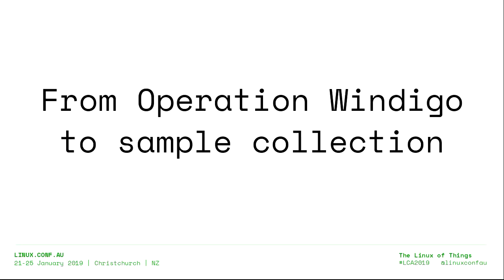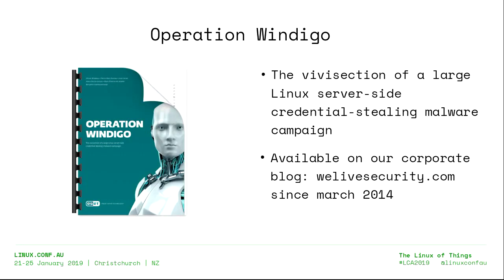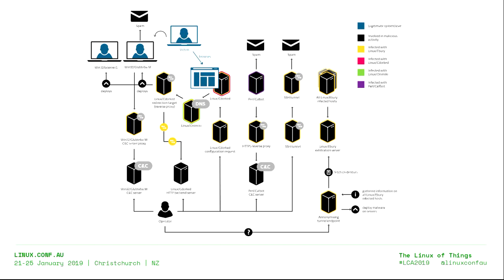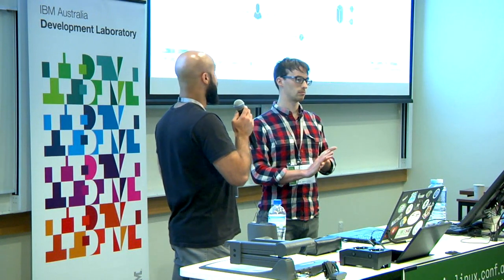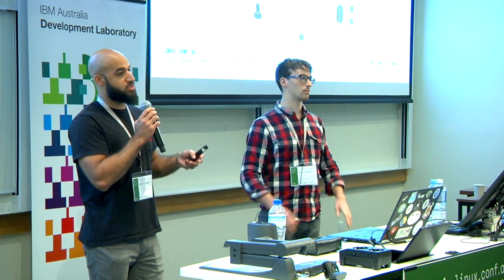In 2014 we released a paper about what we call Operation Windigo, still available on our blog. Operation Windigo was a very complex threat, and at its core was the Ebury backdoor. Ebury is an OpenSSH backdoor and credential stealer. During this operation, the attackers compromised more than 40,000 servers, including Kernel.org and some cPanel support servers.